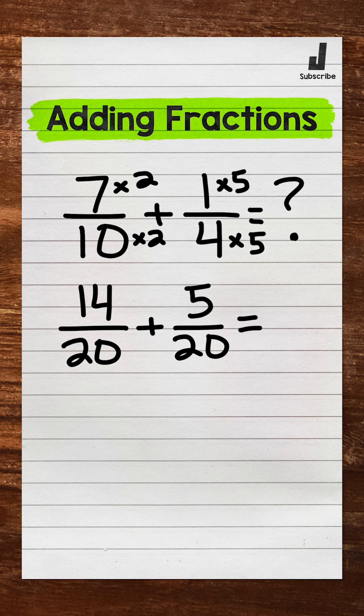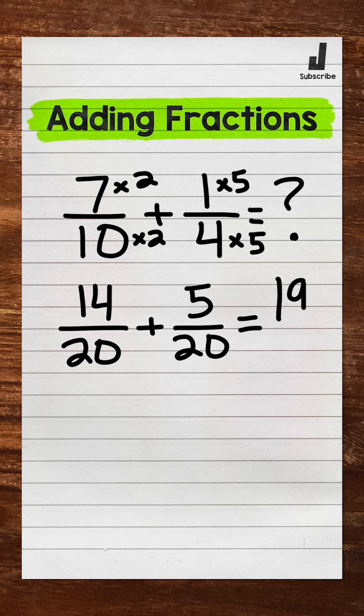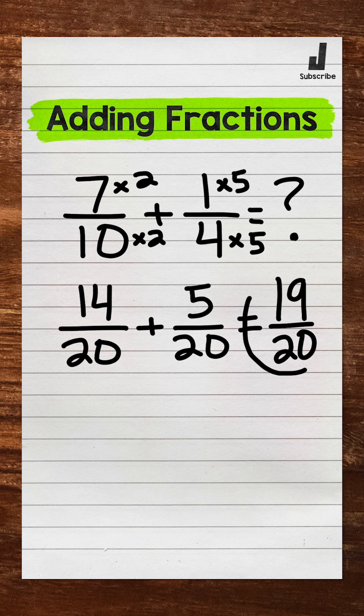Now we can add. 14 plus 5 is 19. Keep the denominator of 20 the same. 19 twentieths is in simplest form, so we are done. That's a very quick review. Check the description for a link to a more detailed explanation. Until next time, peace.